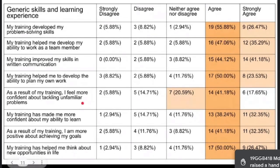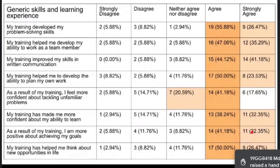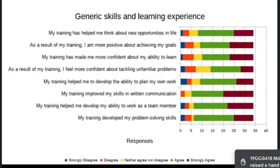We are investigating the undecided responses through qualitative methods, as this is a partial representation for seminar purposes. 'My training has made me more confident about the ability to learn' — most agreed. 'As a result of my training, I am more positive about achieving my goals' — agreed by more than 73%. 'My training has helped me think about new opportunities in life' — this reflects the all-round development proposed by Gandhiji, and the programs are helping. Some items exceeded 80% agreement.